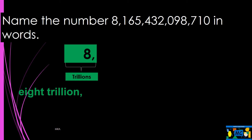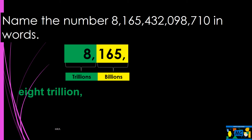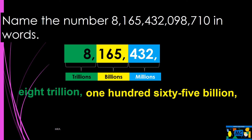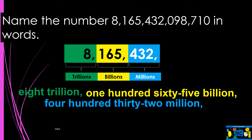The next period to the right is billions. Write 165 in words, followed by its period name, billion. The next period to the right is millions, so write 432 in words, followed by its period name, million.